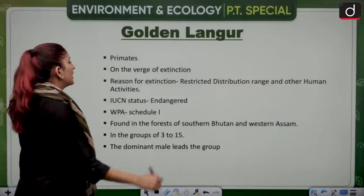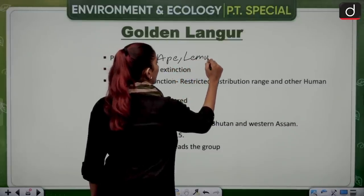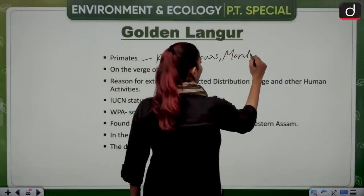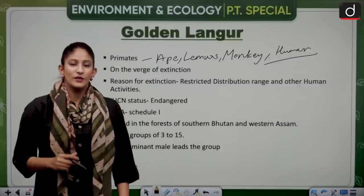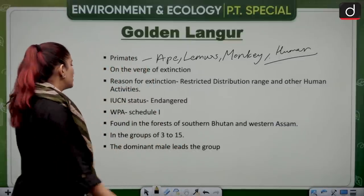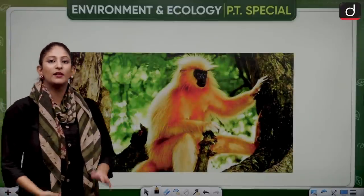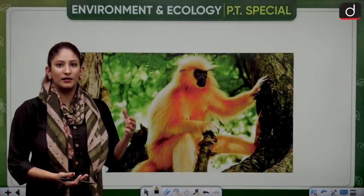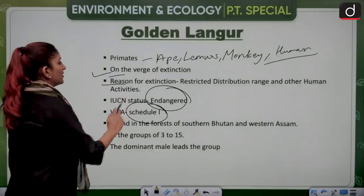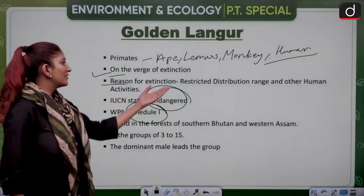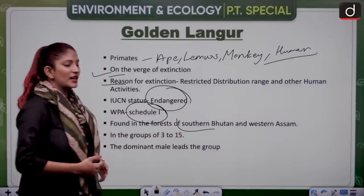The golden langur is one of the primates — primates include apes, lemurs, monkeys and humans. Golden langurs are listed as endangered according to the IUCN Red List and are protected under Schedule 1. They come in groups of 3 to 15 members, with the male langur dominating the group. They are on the verge of extinction due to restricted distribution range — found only in the forests of Southern Bhutan and Western Assam — and human encroachment.